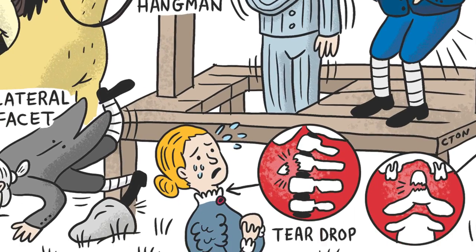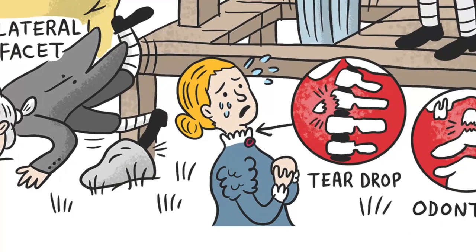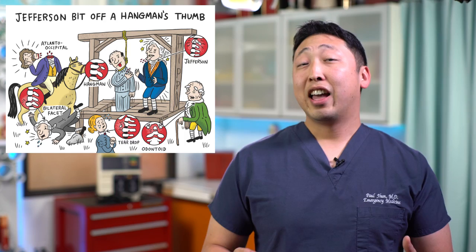T is for teardrop fracture. They come in two flavors, extension and flexion teardrop. Flexion is more severe as it's associated with disruption of the posterior longitudinal ligament.